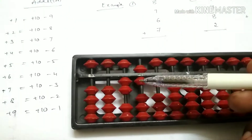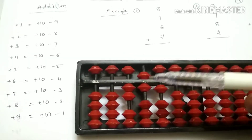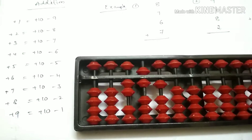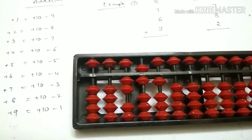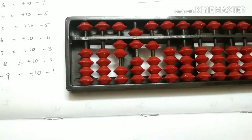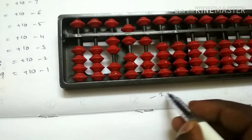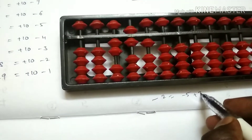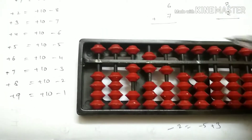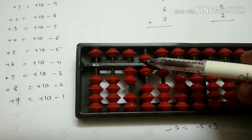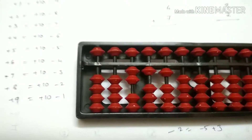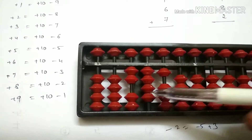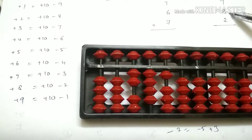Minus 2 — no sufficient beads. Smaller friend subtraction. Minus 2 is equal to minus 5 plus 3. So minus 5 plus 3 equals: 1, 2, 3. That is plus 8 over.